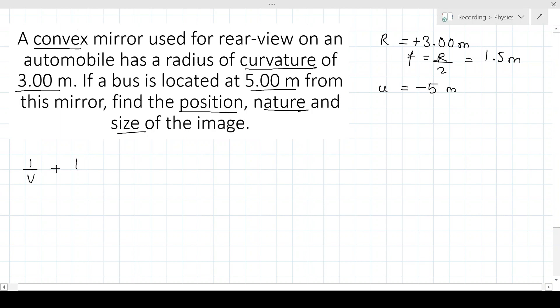So now we can apply the mirror formula, that is 1 by v plus 1 by u equals 1 by f. That gives us 1 by v plus 1 by minus 5 equals 1 by 1.5. Simplifying this, you should get 1 by v equals 10 by 15 plus 3 by 15, that equals 13 by 15.